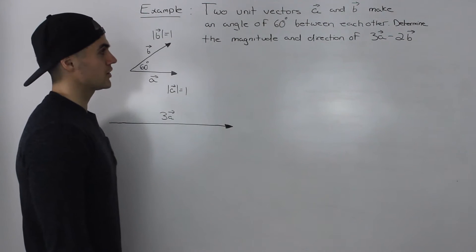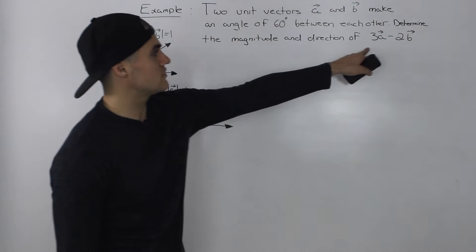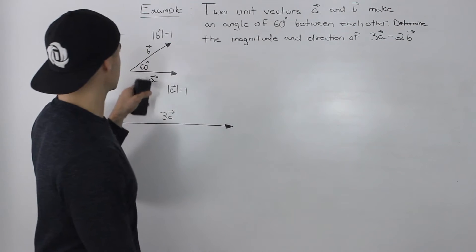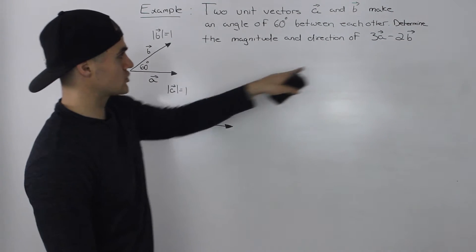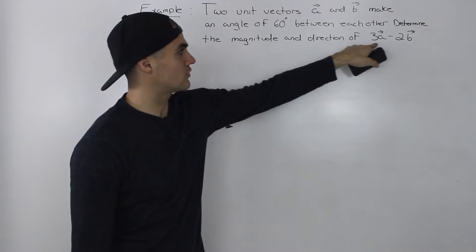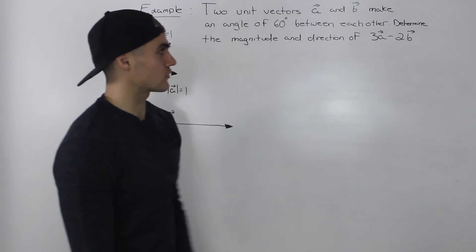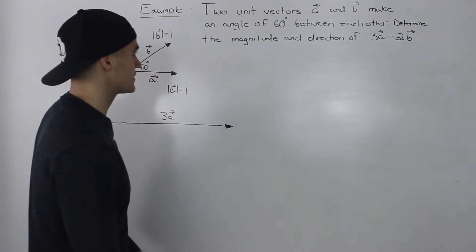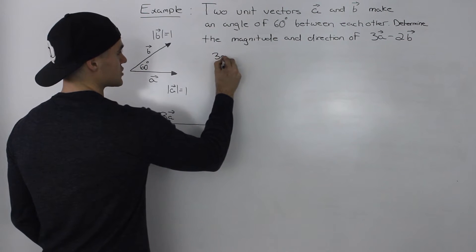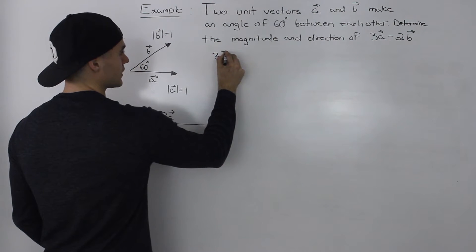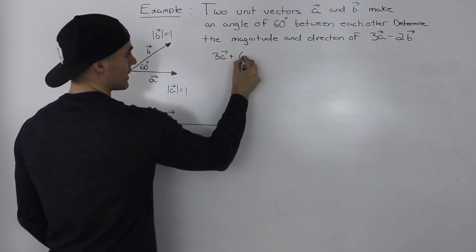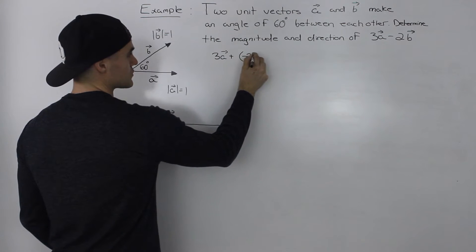Now, moving on to the tricky part — let's draw the diagram. Knowing that this is A and B, let's draw the resultant vector for 3A minus 2B. We can also rewrite 3A minus 2B as 3A plus negative 2B.